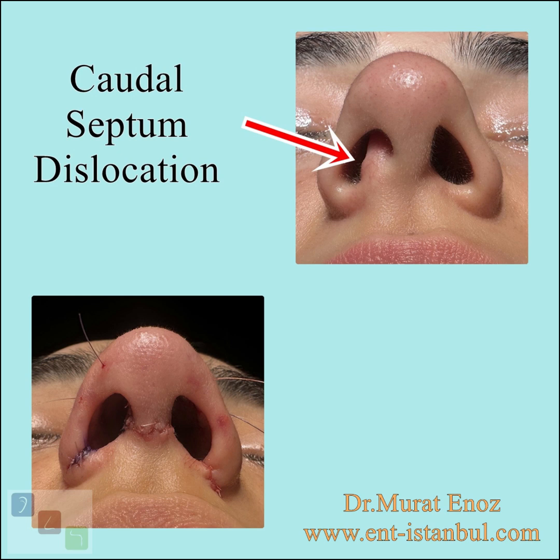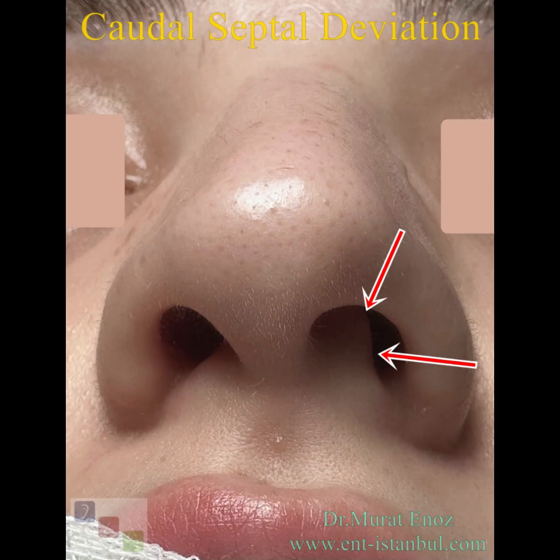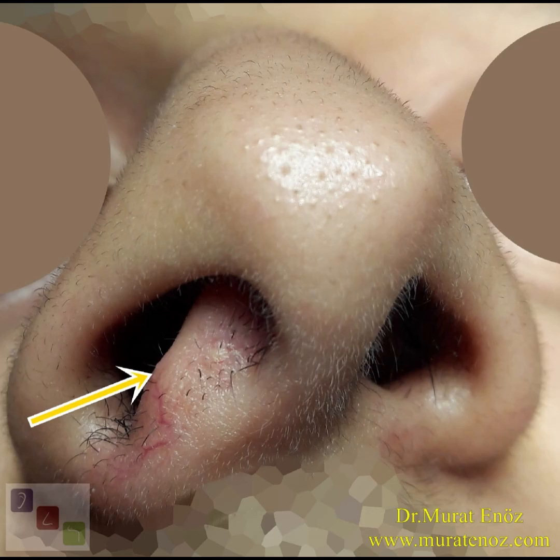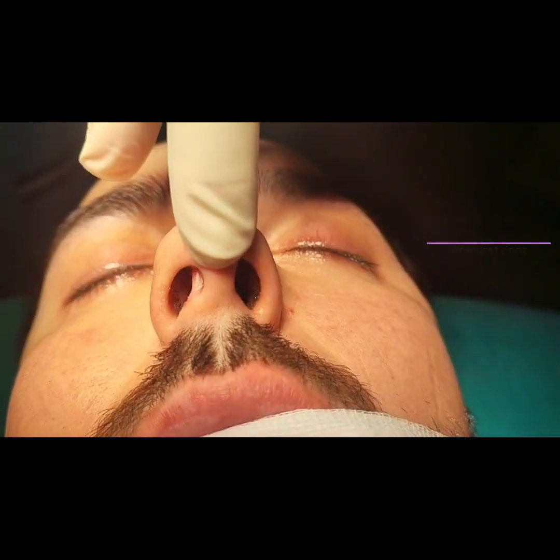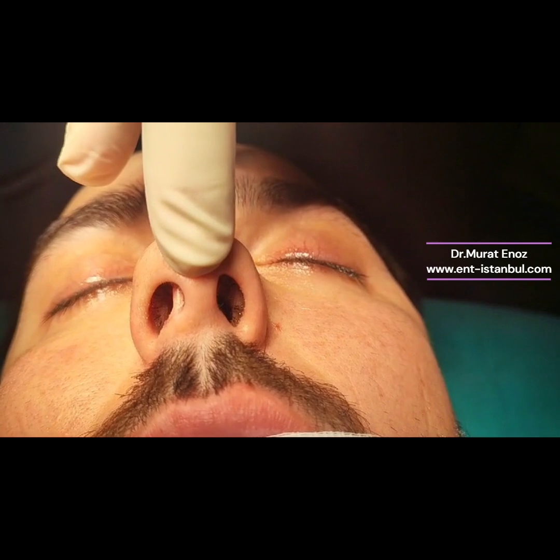Caudal septum deviation, or anterior septal dislocation, is a condition where the lower part of the nasal septum near the nostrils is misaligned, causing nasal obstruction and breathing difficulties. This deviation can impact both nasal function and appearance.